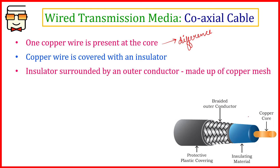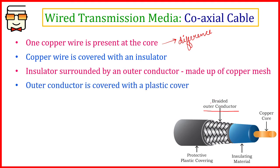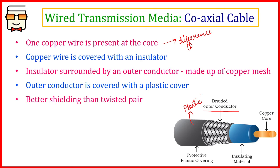There is an insulating material covering the copper wire for damage protection. After this inner insulation, there is a copper mesh — another conducting layer made up of copper in a mesh structure. This mesh protects the signal and the wire from damage, and also improves signal capacity and data transfer capacity. The outermost protective covering is made up of plastic.